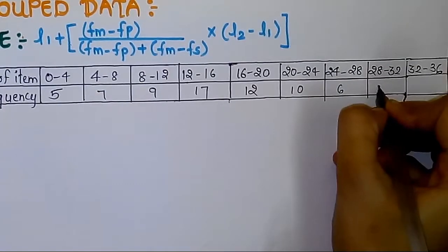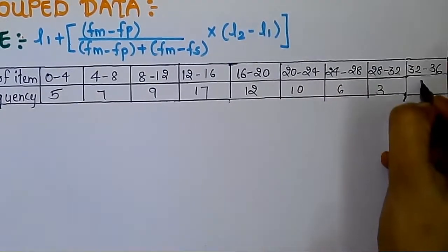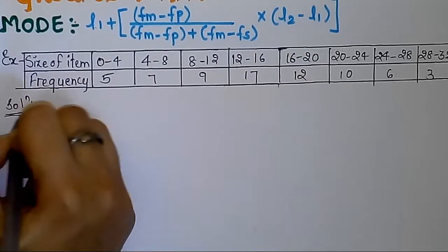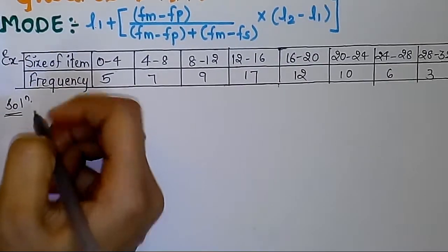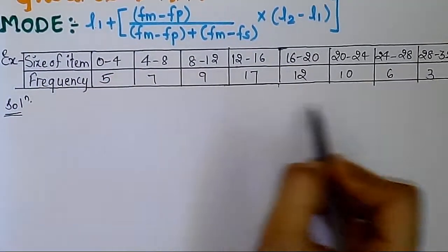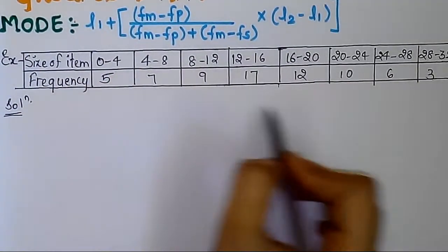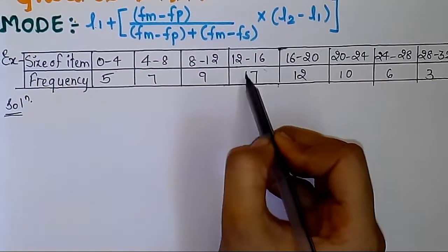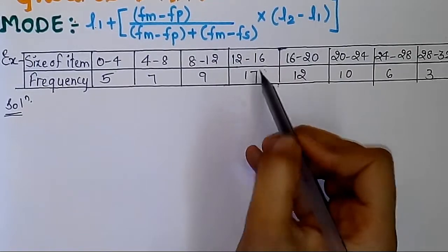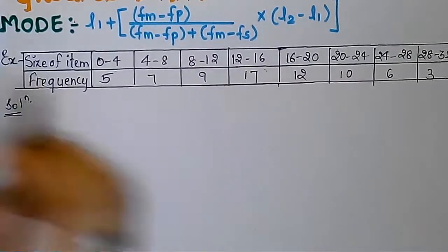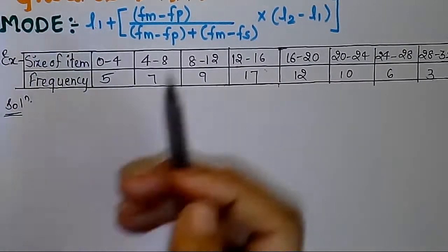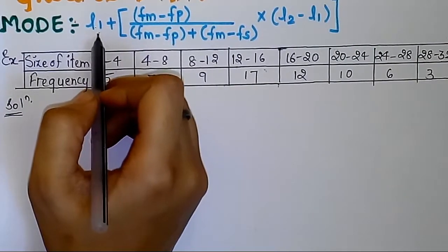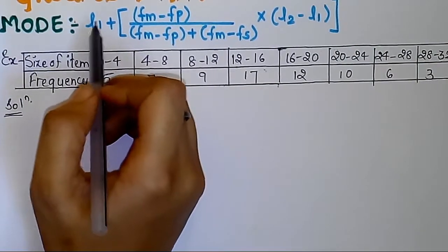The remaining frequencies are 12, 10, 6, 3, 1. In the formula: l1 means the lower limit, fm means the maximum frequency of the modal class, fp means the frequency of the preceding class, fs means the frequency of the succeeding class, and l2 minus l1 means upper limit minus lower limit. These are all the formula labels.